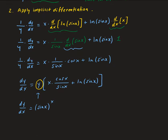So we have sin x to the power x times x times cosine x over sin x. Note that cosine x over sin x is cotangent x — that's a trigonometric identity. So the result is sin x to the power x times x times cotangent x plus natural log of sin x. That is our derivative, expressed entirely in terms of x.